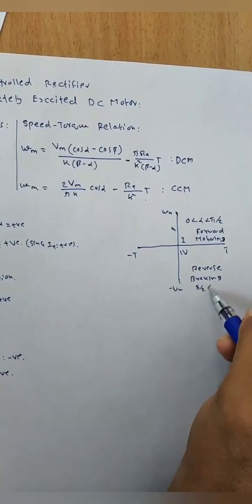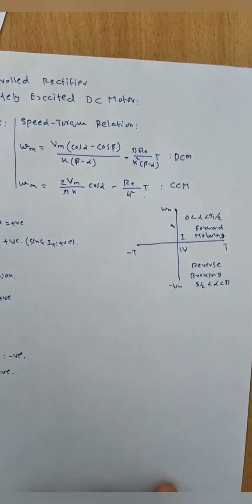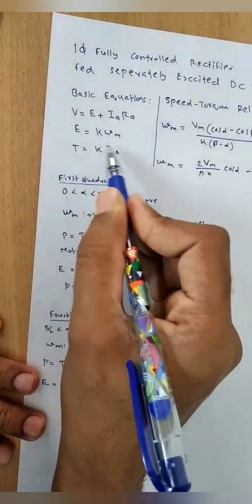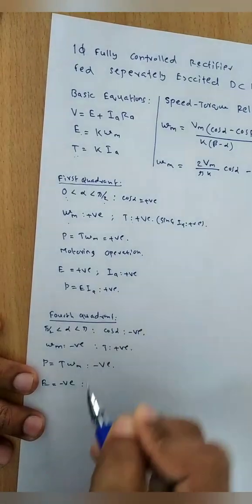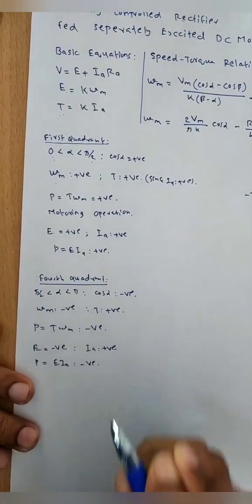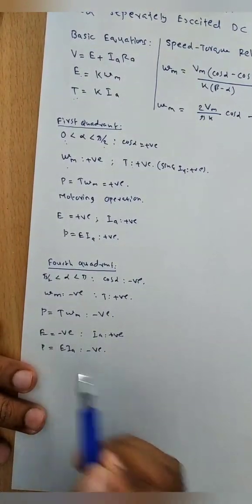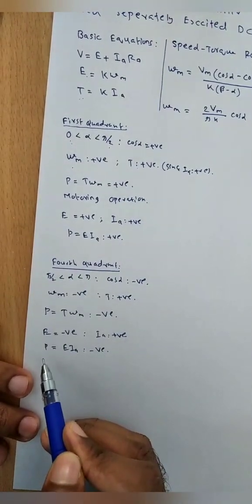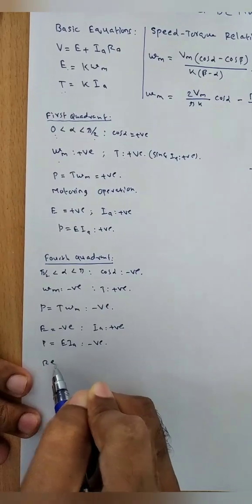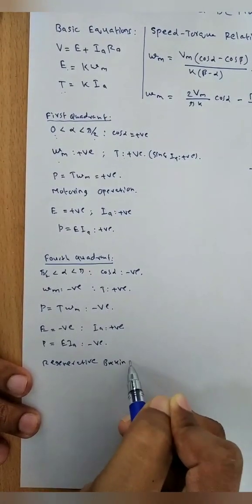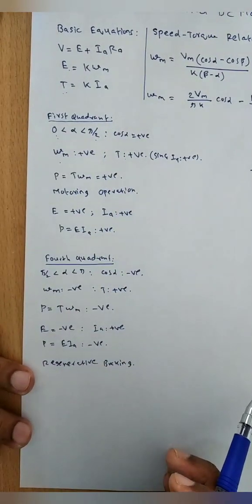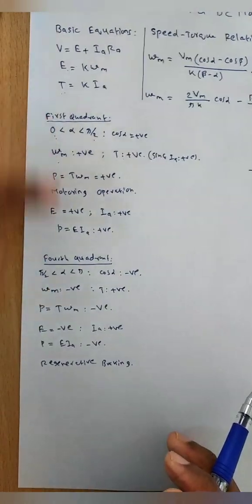This is achieved by controlling alpha between π/2 and π. Since E = K × ω_M and ω_M is negative, E is negative. But i_a is always positive in a controlled rectifier, so P = E × I_a is negative. This is regenerative braking mode. So we can achieve forward motoring and reverse regenerative braking using the controlled rectifier by controlling the firing angle alpha.